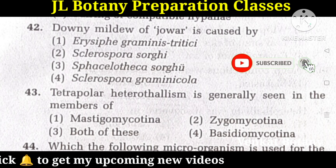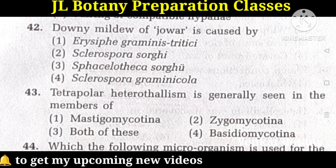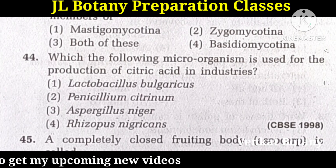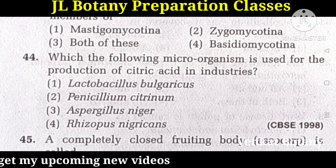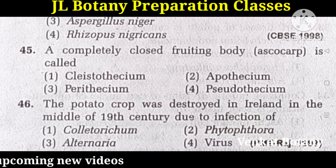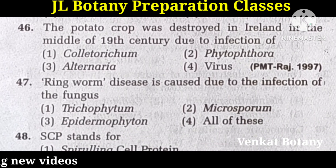Which microorganism is used for the production of citric acid in industries? Penicillium citrinum — the second option. A completely closed fruiting body is called Cleistothecium — the first option. The potato crop was destroyed in Ireland in the middle of the 19th century due to infection of Phytophthora. Ringworm disease is caused due to the infection of all of these: Trichophyton, Microsporum, and Epidermophyton.